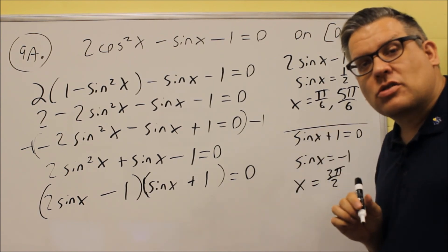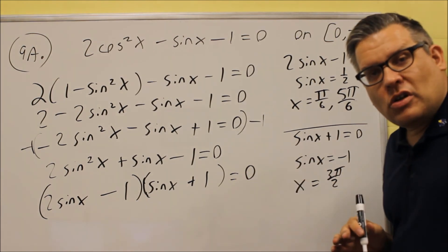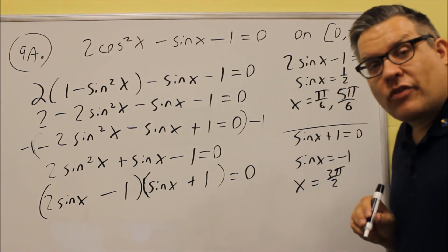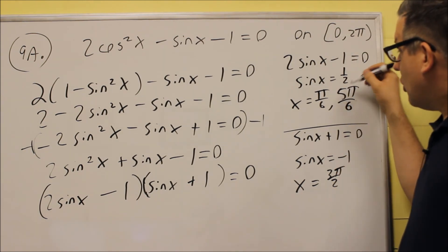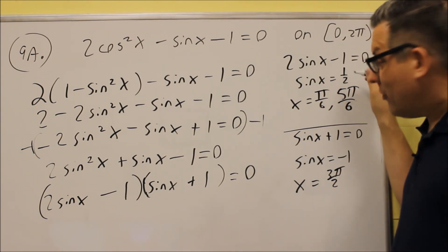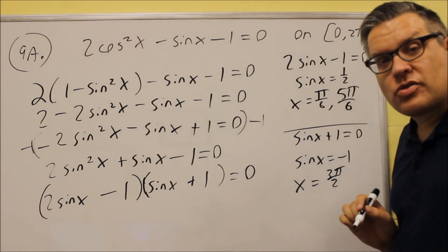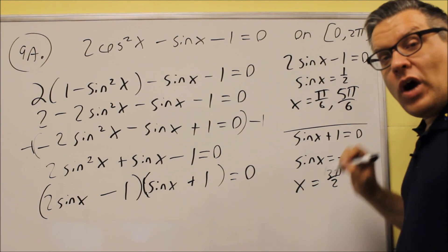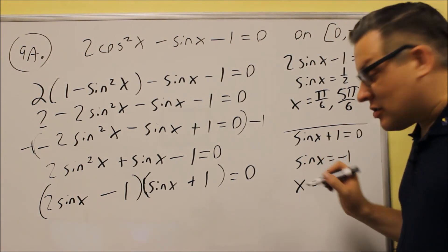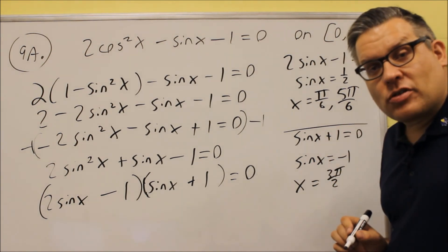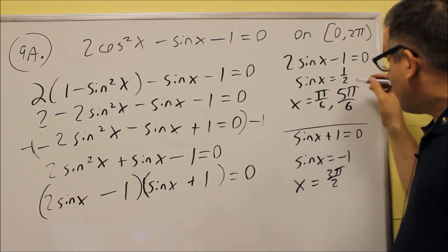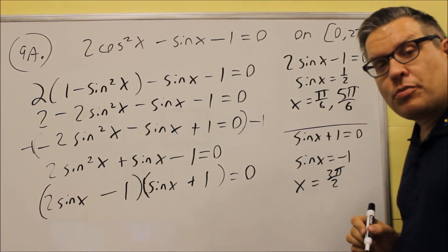So you can double-check these. You should have a unit circle with you as you're working through these kind of problems, and you can just read those values off the unit circle. So again, you're looking for wherever you have a y-value of 1 half that occurs at these two angles on the unit circle. And then you're also finding where the y-value is equal to negative 1 on the unit circle, and that's going to happen at 3 pi over 2. On your answer blank, you're going to put all three of these, pi over 6, 5 pi over 6, and 3 pi over 2.